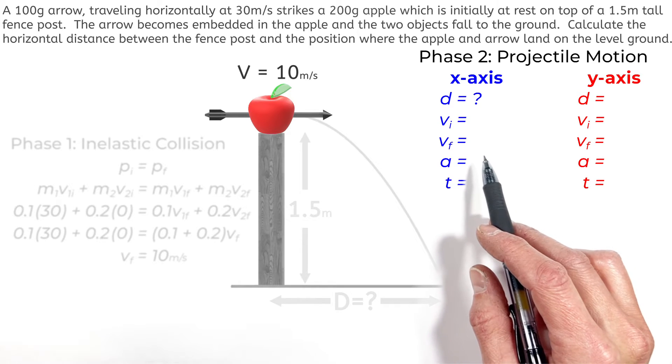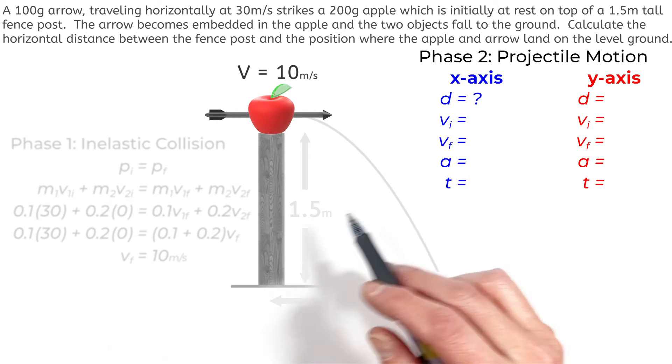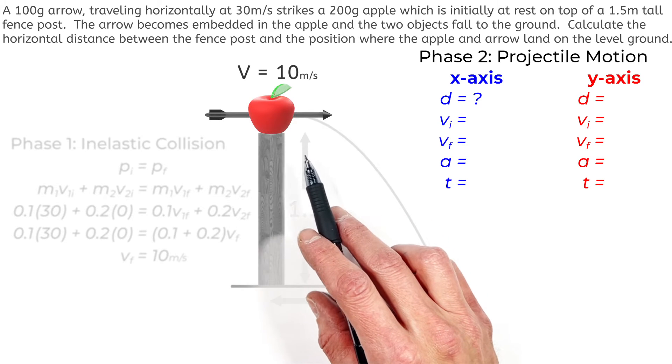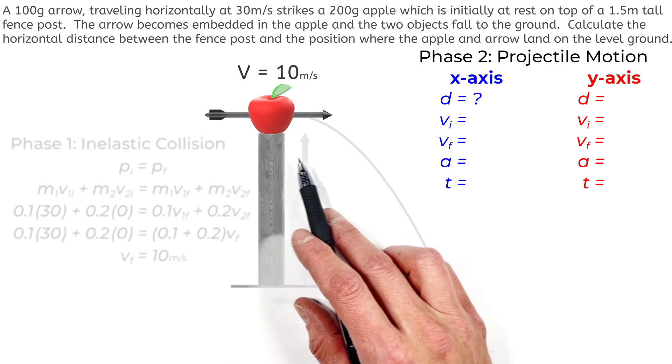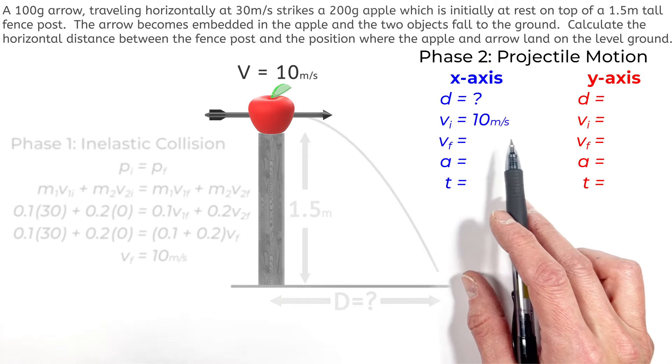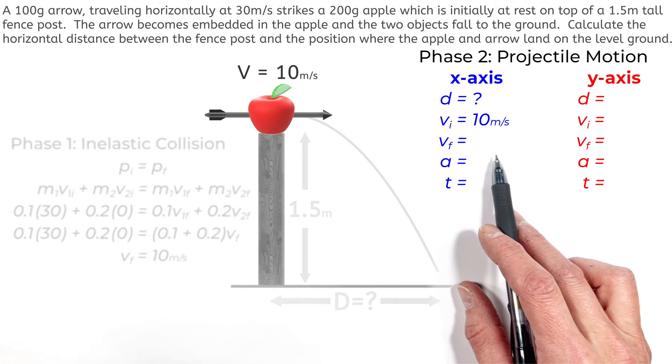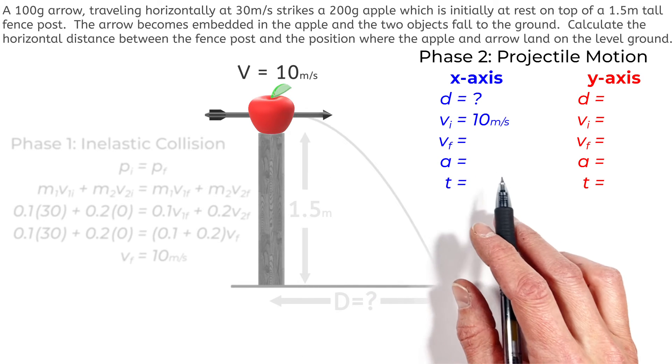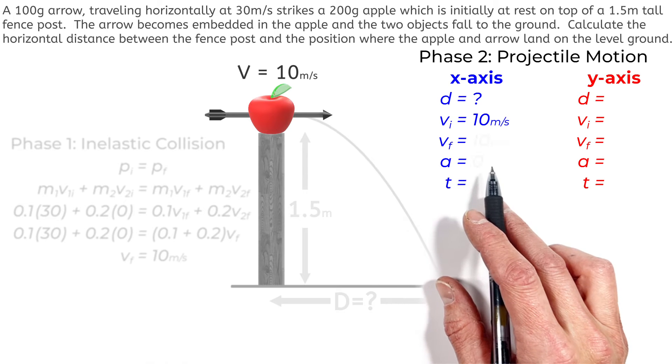Now moving on to the velocity, this is where people tend to get confused. This velocity that we solved for over here, this was the horizontal velocity of the arrow and apple just after the collision. So that is going to be our horizontal velocity, that's 10 meters per second. Now anytime we're dealing with projectile motion on Earth, in the absence of air resistance, the acceleration is going to be zero.